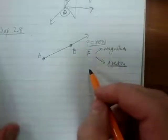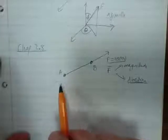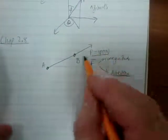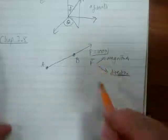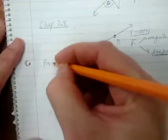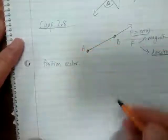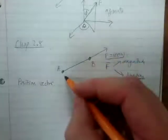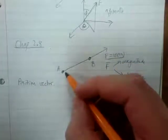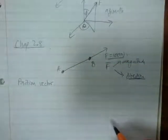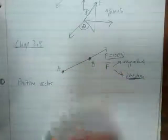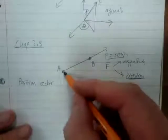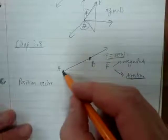The first step to convert this force, which is only given to me as a magnitude, into Cartesian Vector Notation is to calculate the position vector. A position vector is simply a vector telling me how to get from point A to point B — you can look at the previous videos and also read in your textbook. A position vector gives me a direction, and remember, it is also in Cartesian vector form.